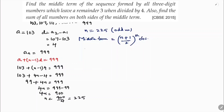The middle term position is (225+1)/2 = 226/2 = 113. So the middle term is the 113th term, that is a₁₁₃.